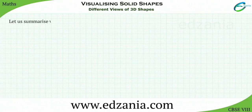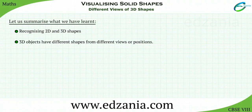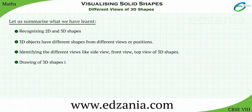Let us summarize what we have learned: recognizing 2D and 3D shapes; understanding that 3D objects have different shapes from different views or positions; identifying the different views like side view, front view, and top view of 3D shapes; and drawing 3D shapes in different views like side, top, and front views.